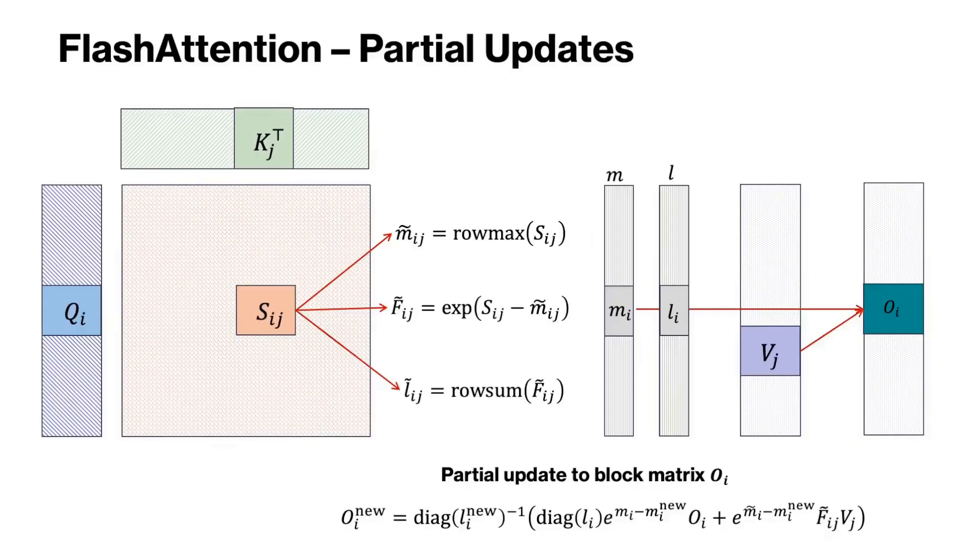We make blocks of the Q, K, and V matrices based on the size of SRAM. Here i is the index of block for Q and j is the index for blocks of K and V. Using blocks qi and kj, we first compute the attention scores sij as qi times kj transpose, and then we compute the max of each row, followed by the matrix fij as exp of sij minus m, and the normalization factors as the sum of each row of fij.